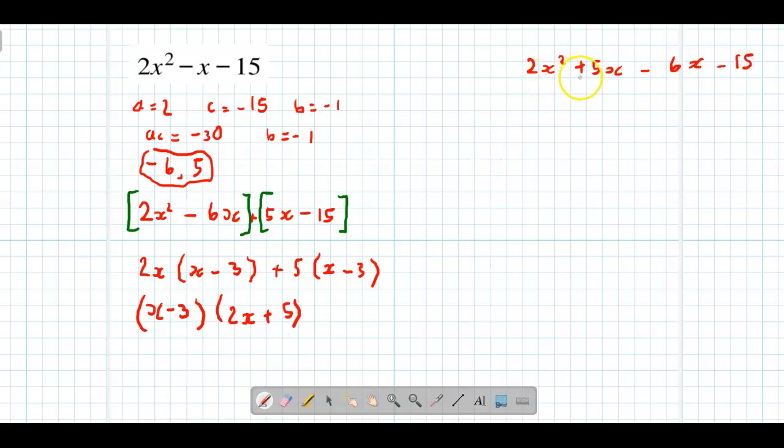We can see the common factor in the first group is x, leaving 2x + 5. As we've already done the other method, we can see that's already one of our brackets.